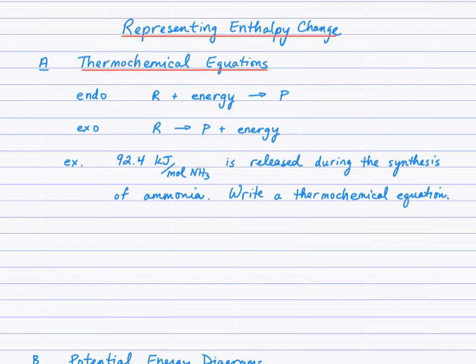Start with a balanced equation for the synthesis of ammonia. Write that down and then check back with the video. Hopefully your balanced equation looks like this. Now, 92.4 kilojoules per mole is released from the system. Is this an endo or exothermic reaction? Hopefully thinking exo. If we were to write that molar enthalpy as a given value, then we would need to write that ΔH equals negative 92.4 kilojoules per mole of ammonia.